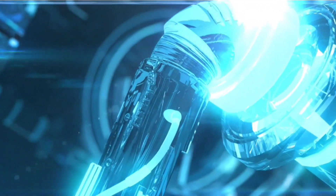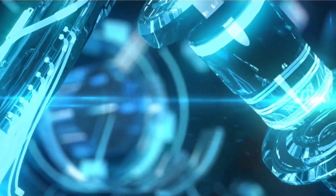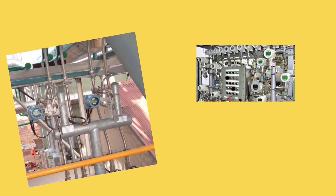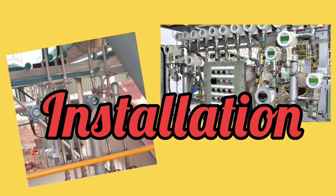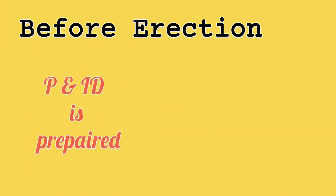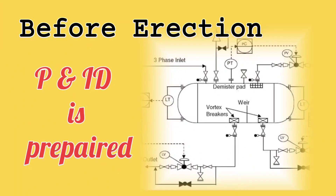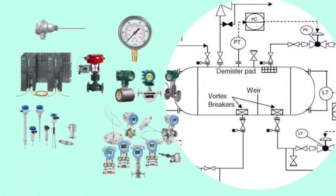To run any machinery and for its automation, it is also necessary to install instrumentation. In erection, various instruments installation is done. Before erection, P&ID — means piping and instrumentation diagram — is prepared. From this, it is known which instrument is to be installed where.